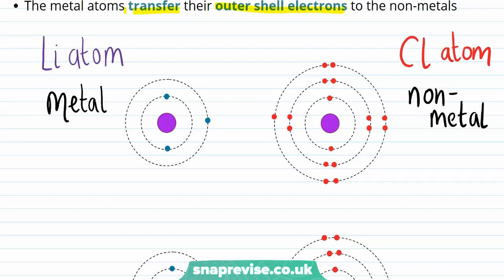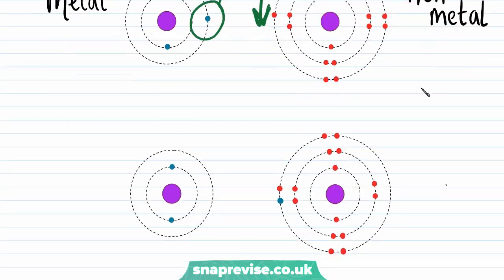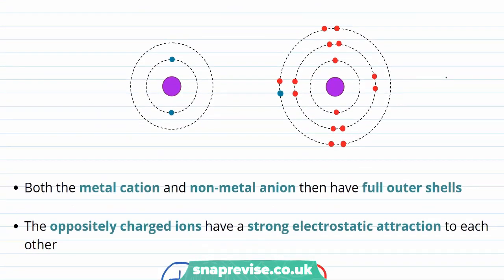Therefore, for an ionic bond to form between these two atoms, the metal atom will transfer its outer shell electron to the nonmetal. This outer shell electron from lithium is transferred over to the chlorine atom. The lithium has lost its outer shell electron and it has been transferred over to this chlorine atom. We've kept the electron from the lithium in blue so you can easily see the transfer.